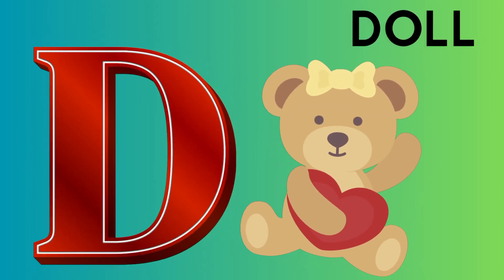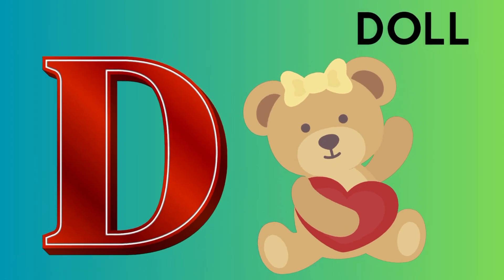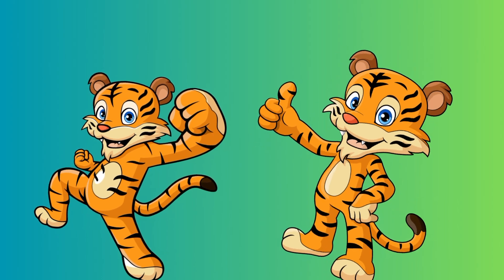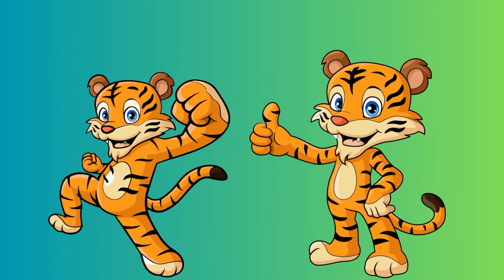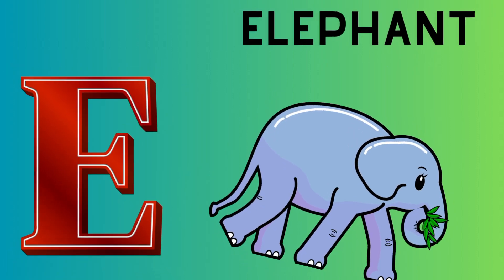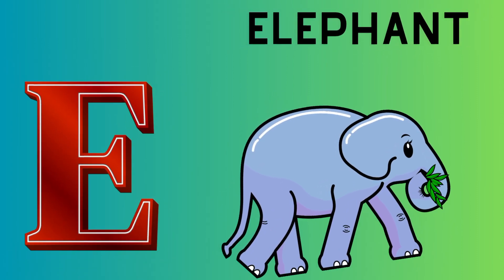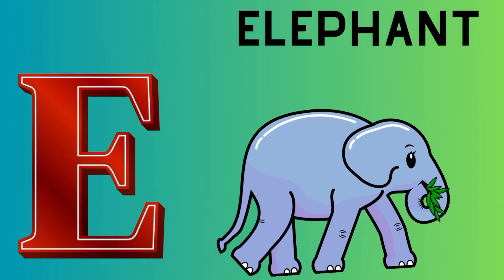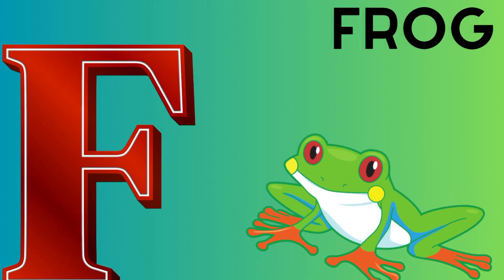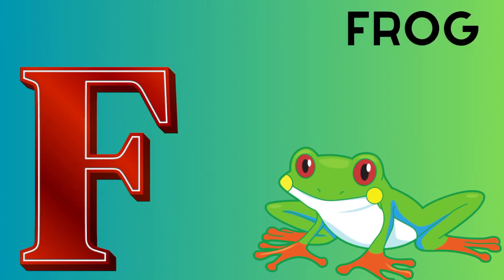D is for doll, d-d-doll. E is for elephant, e-e-elephant. F is for frog, f-f-frog.